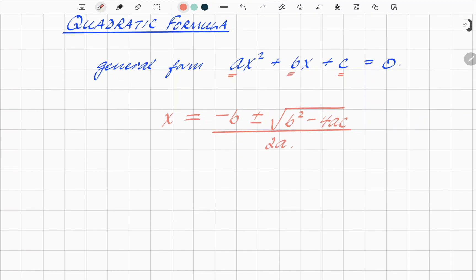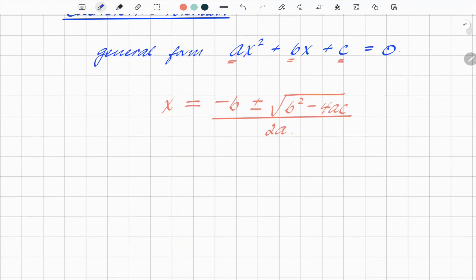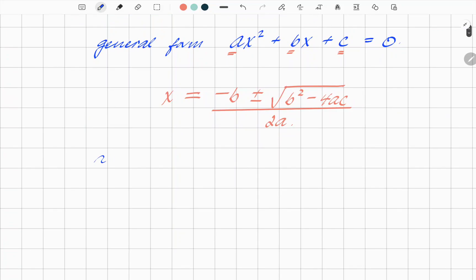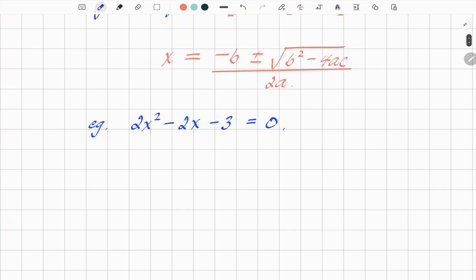So let's use an example and show you how it works. Let's say, for example, we have 2x squared minus 2x minus 3 equals 0. From that, we can actually note what the coefficients are.